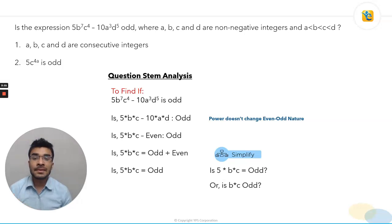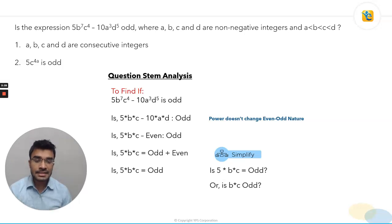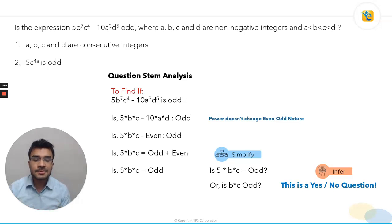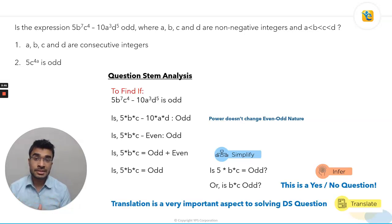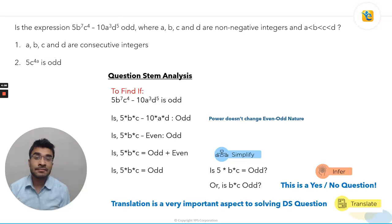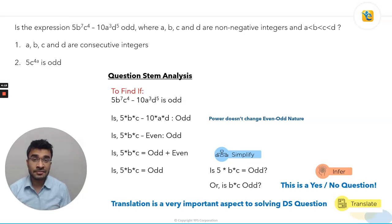From that complex expression, we've reached a simple one. This simplification process is something to inculcate as a habit. Now that we have the question reduced to whether b times c is odd, this becomes a yes/no question. Any statement that tells me whether b times c is odd is a sufficient statement. A very important process skill used here is translation, along with simplification and inference — three process skills that help us solve questions with much more accuracy in limited time. I recommend watching the videos on process skills linked in the description or top right corner.